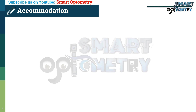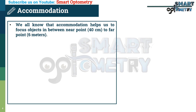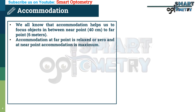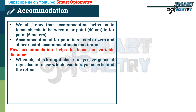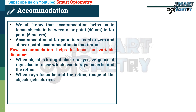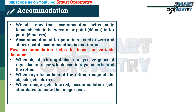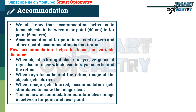Let's understand how accommodation works. Accommodation helps us to focus objects from near point to far point. Accommodation at the far point is relaxed or zero, and at the near point it is maximum. When an object is brought closer to the eyes, the divergence of rays from that object increases, causing rays to focus behind the retina. When rays focus behind the retina, the image becomes blurred, and accommodation gets stimulated to make the image clear. This is how accommodation maintains a clear image between the far point and near point.